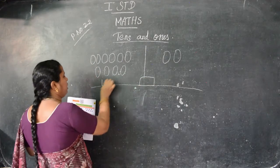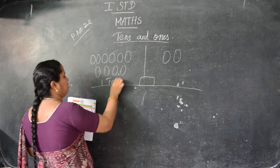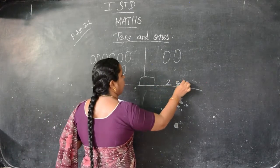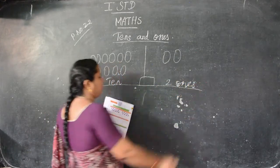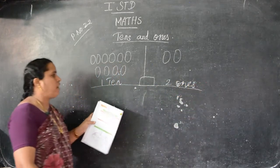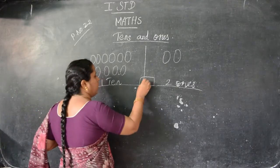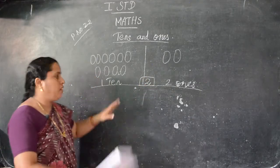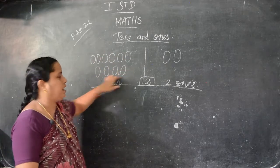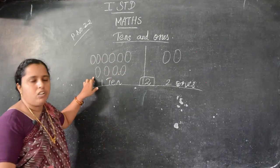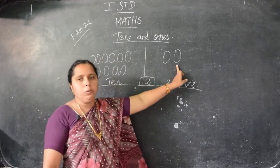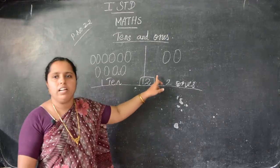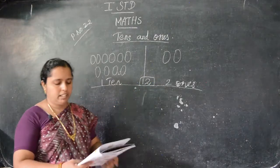Here see: 1 ten and 2 ones. So 1 ten means you have to draw 10 X, and 2 ones means only 2 X. So what is that number? 2, 1 — so 12. How many X are there? 12 X. Understand children?